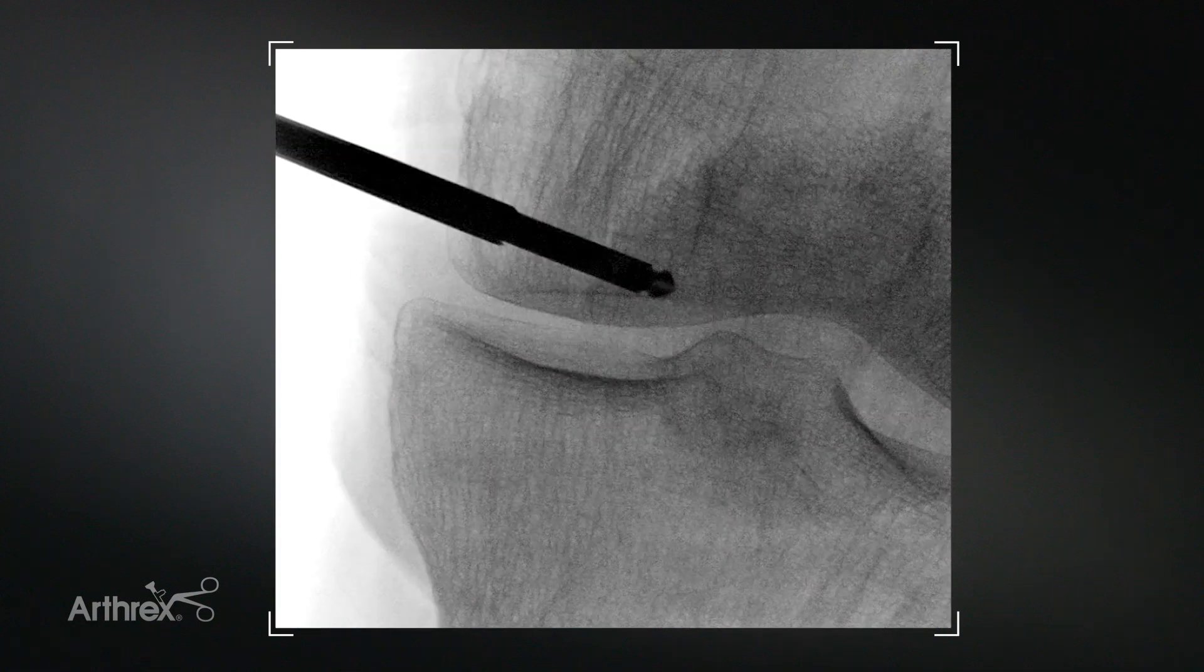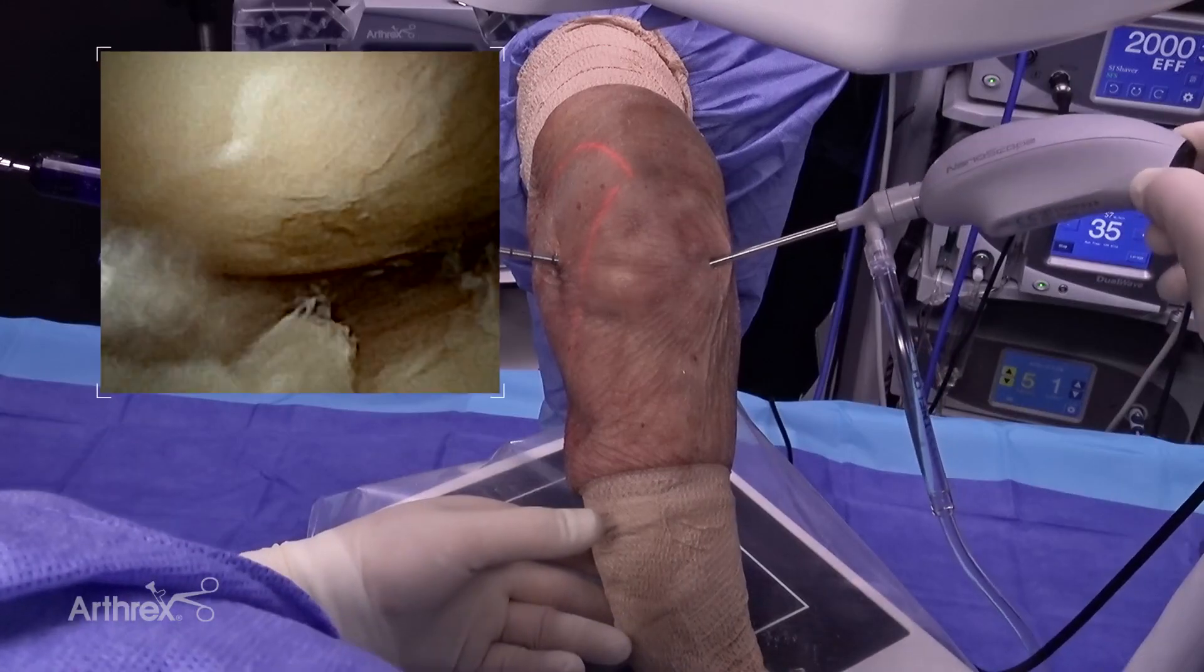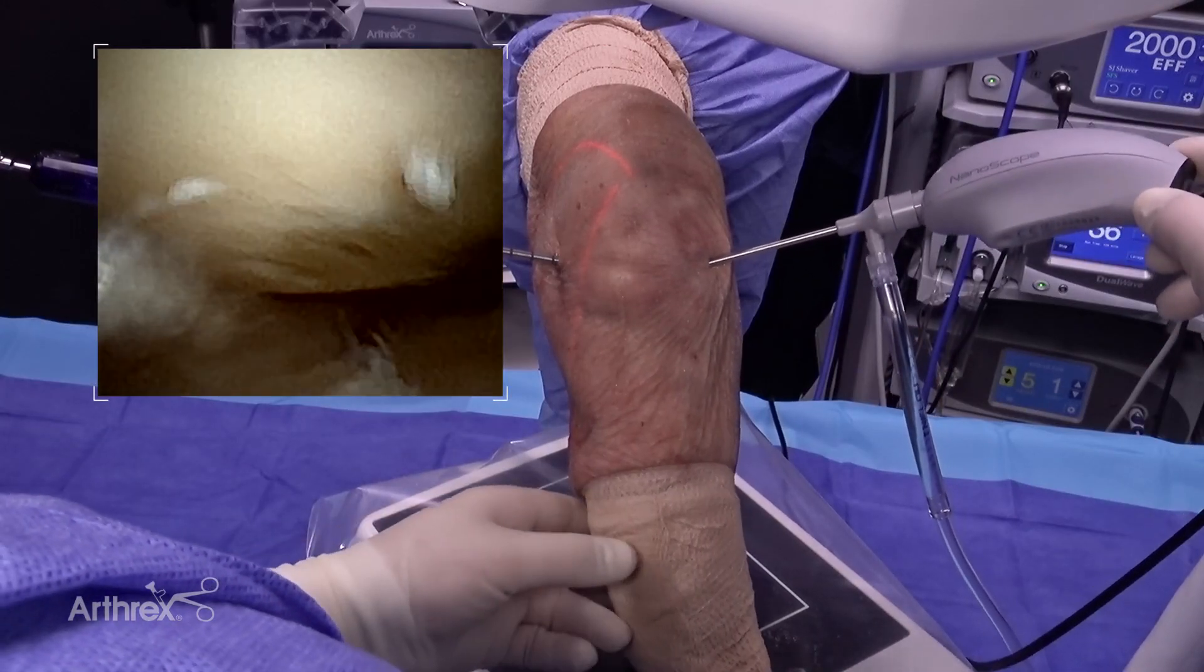So now if we want to, we can check it with the scope. So here we are inside the joint. You can see that we have not penetrated the cartilage. So that all looks great. And if you want to, you can even just keep the arthroscope in the joint while you're doing this. So if you've got enough hands, you can do that.